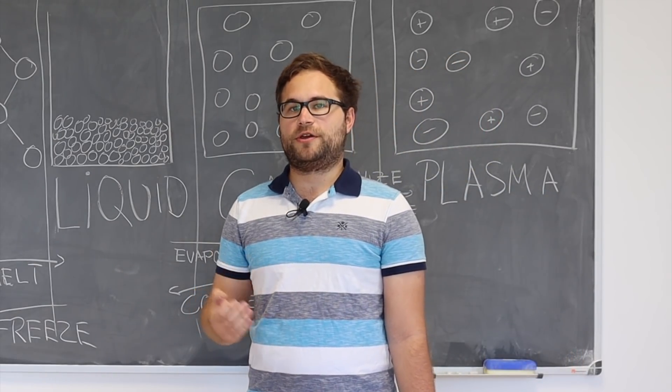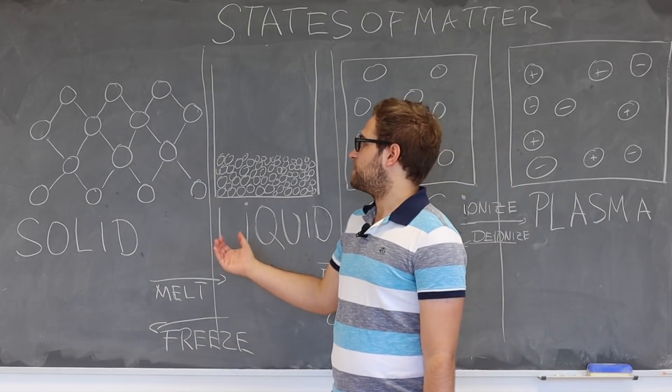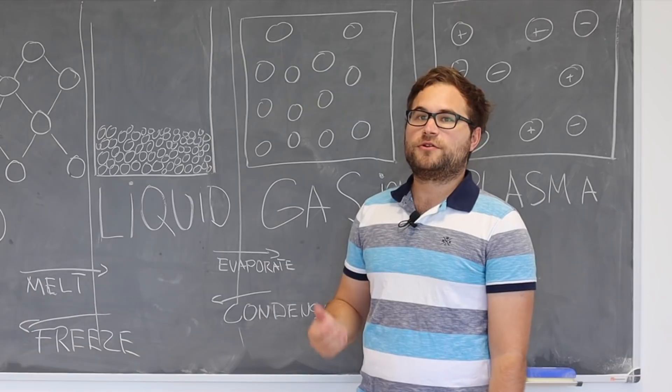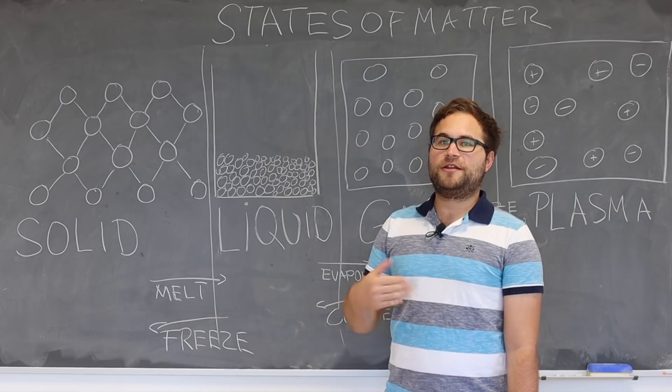Historically, the difference between states of matter is based on their qualitative differences. The constituents of a solid, for example the atoms, are held closely together by forces in between them. Solids have a definite shape and a fixed volume.